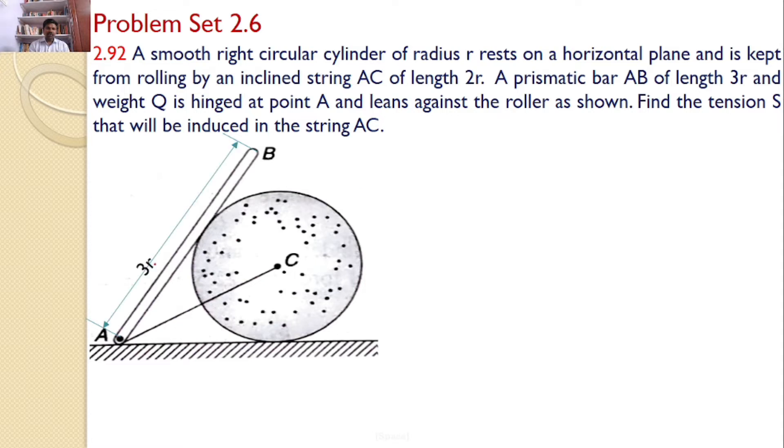Given that the length of the bar is 3r and there is a self-weight Q at the center of gravity, which is the midpoint of AB. This distance must be equal to 1.5r because the total length is 3r. AC length is given as 2r. Clearly we can see this is the radius of the cylinder. This distance is also equal to R and which is at right angle.